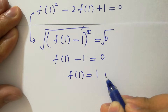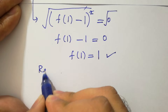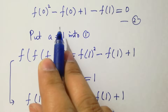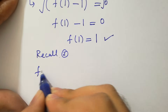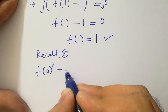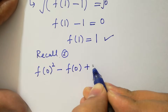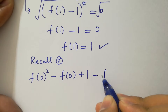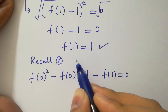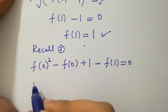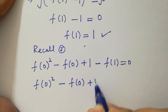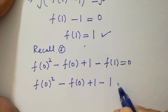Since f of 1 equals 1, recall the second equation, which is f of 0 squared minus f of 0 plus 1 minus f of 1 equal to 0. Substituting f of 1 equals 1, we have f of 0 squared minus f of 0 equals 0.